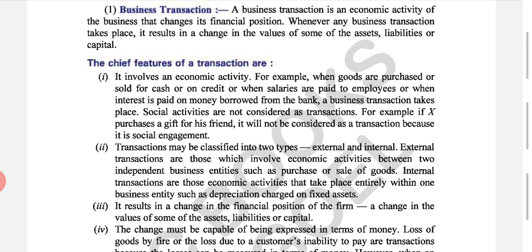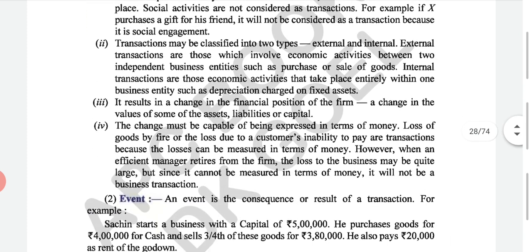It results in a change in the financial position — some assets increase, some liabilities increase, some capital changes. An important feature: the changes must be capable of being expressed in terms of money. For example, loss of goods by fire, or loss due to a customer's inability to pay — these are transactions because the loss can be measured in terms of money. If your shop catches fire and goods are destroyed, that loss can be measured.